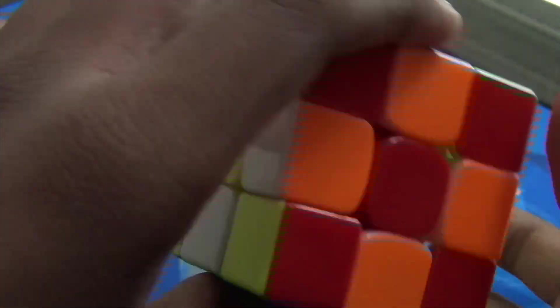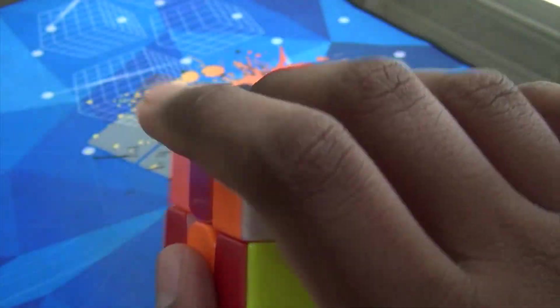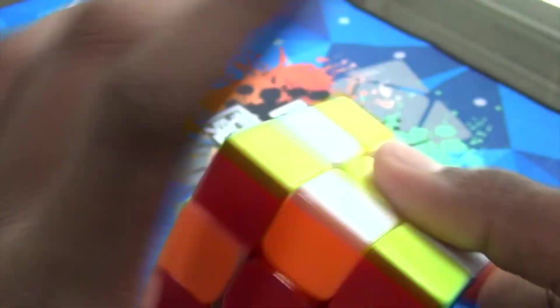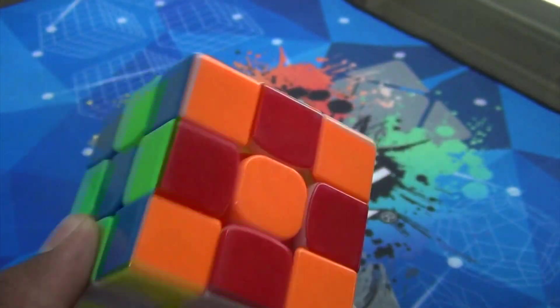First off I'd like to talk about the shades of this cube. They're really bright and vibrant and I like them more than the GAN 356X's and the MF3RS 3M's. The shades are really nice.